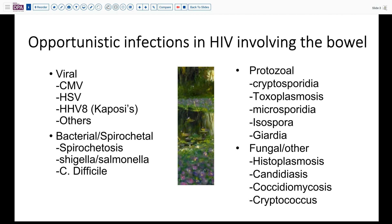On the bacterial side of things, spirochetosis — maybe an under-recognized entity — can also produce a discharge, particularly in these patients who can be quite overgrown with these spirochetes. And then typical sources like Shigella, Salmonella, and Clostridium can also cause diarrhea in these patients. On the protozoal side of things, we have to think about cryptosporidia, which is easily overlooked microscopically. More frequent causes like toxoplasmosis, microsporidia, Isospora belli, and Giardia can also present depending on exposures and activities.